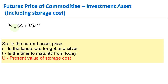The futures price can be calculated using this formula, which is basically the spot price of the asset plus the present value of the storage cost. For example, if you are looking at the futures price of silver — silver has to be stored — and that cost has to be factored in. So U represents the present value of the storage cost.